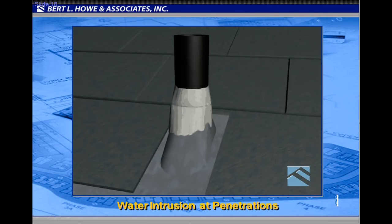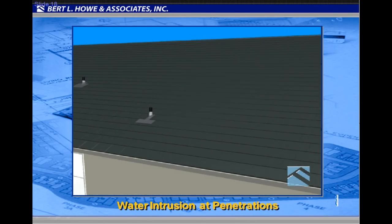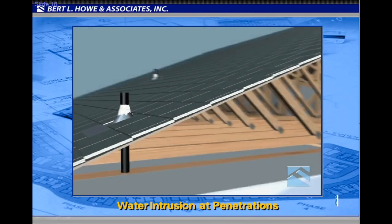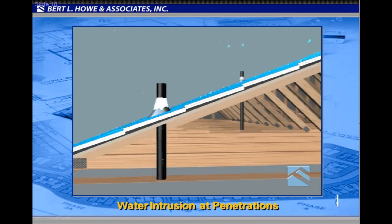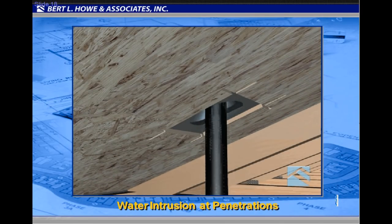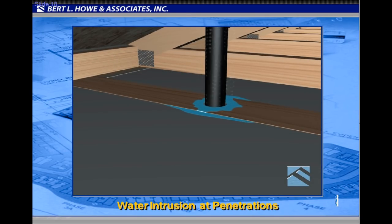Water intrusion through improperly installed or inadequately sealed roof penetrations or flashing components is another typically alleged roofing condition. Once an avenue for moisture intrusion is created, water can enter into the structure, travel along pipes or framing members, and cause staining or other damage to finishes or structural elements.